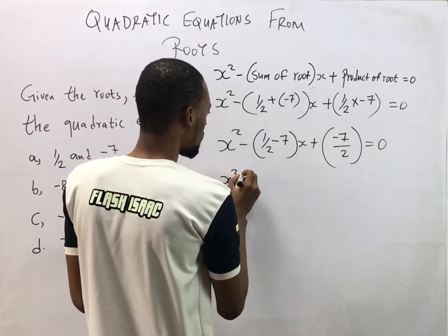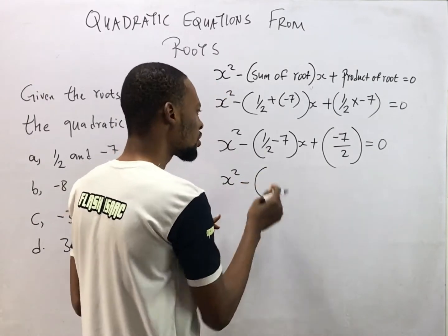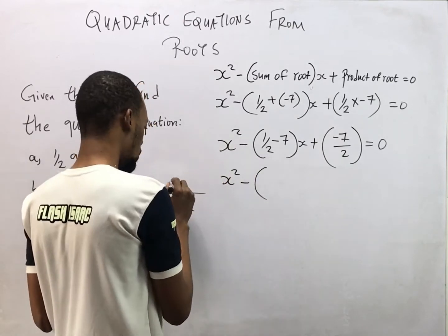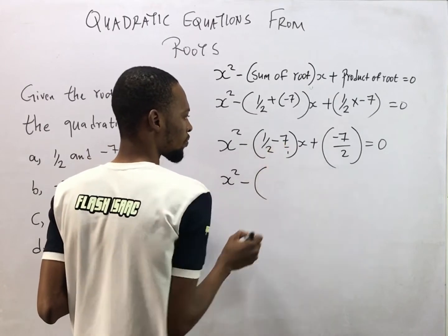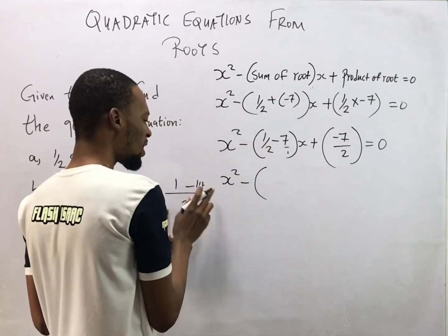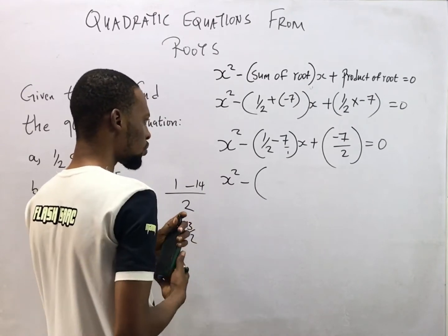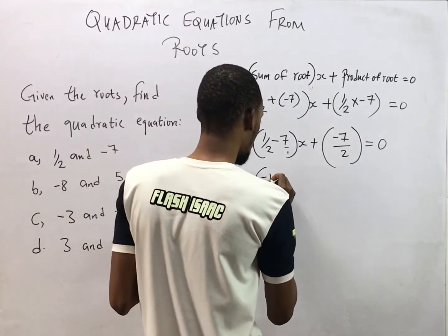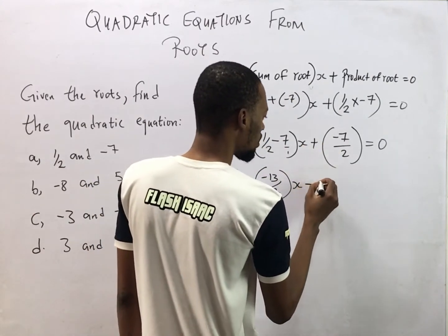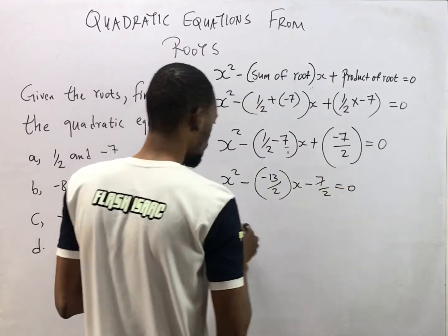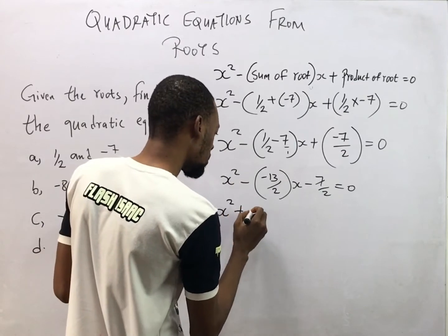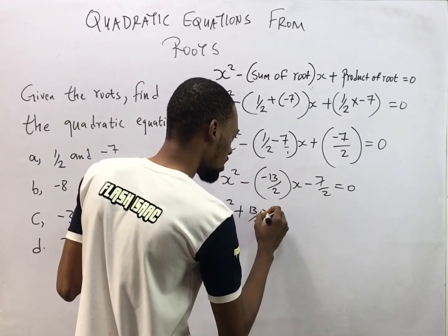Now simplifying: s² minus (1/2 - 7)s. Finding the LCM, which is 2: 2 divided by 2 is 1, so 1 × 1 = 1; and 2 divided by 1 is 2, so 2 × 7 = 14. So 1 - 14 = -13, giving us -13/2. So we have s² minus (-13/2)s minus 7/2 equals zero.